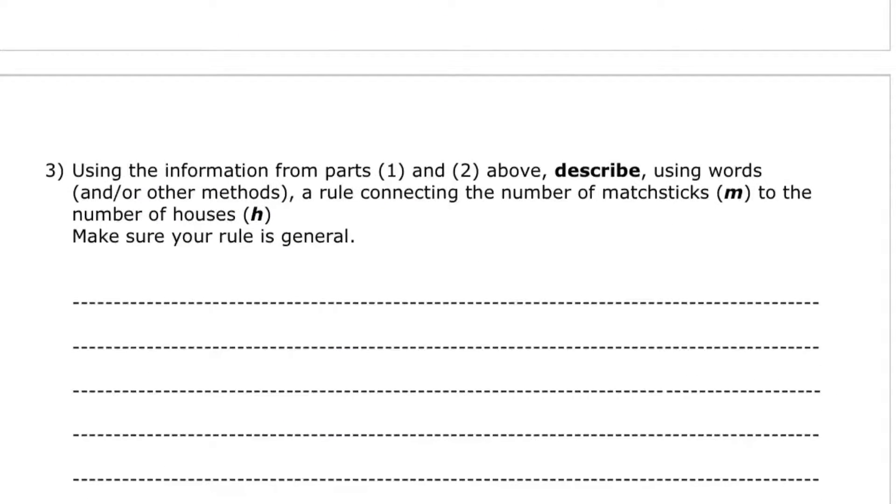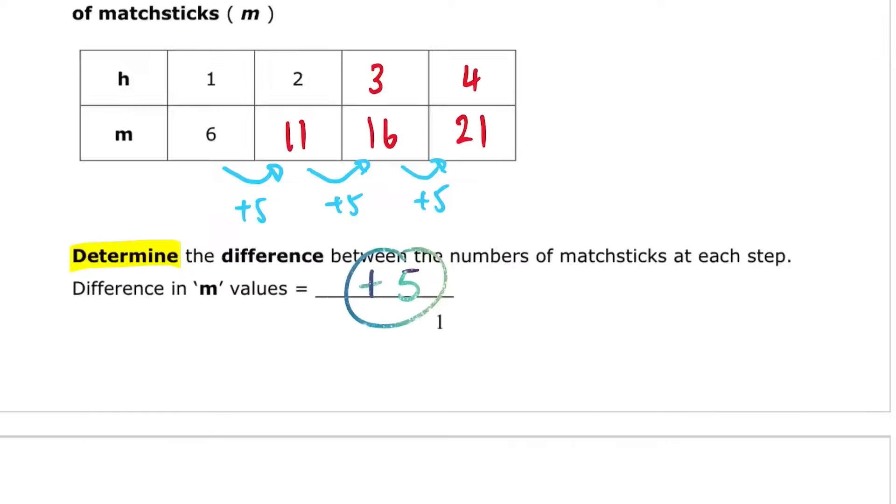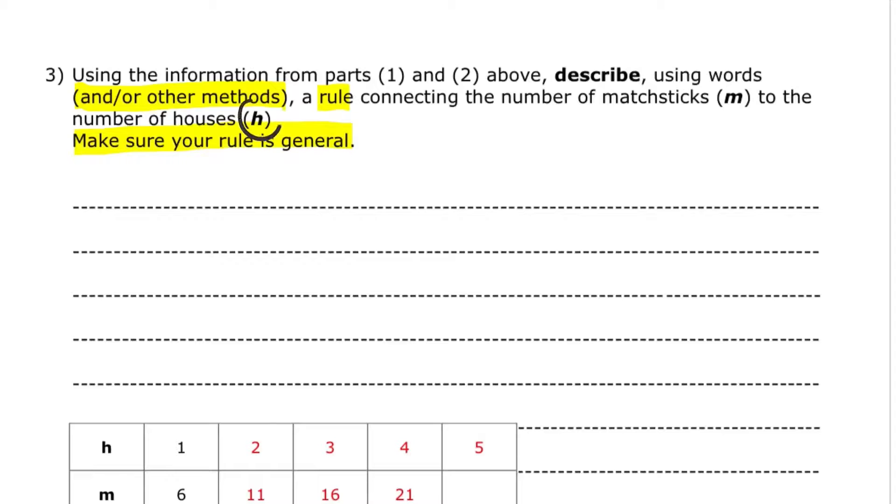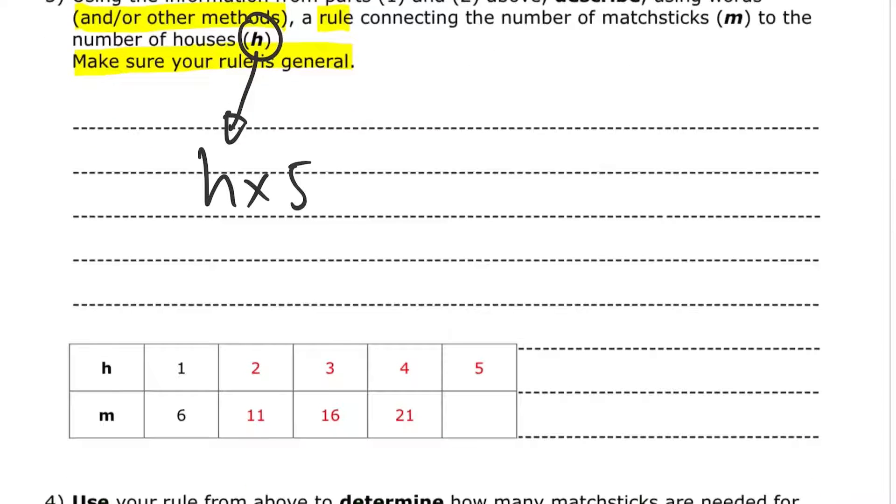Question three. Using the information for parts 1 and 2 above, describe using words and or other methods, a rule connecting the number of matchsticks to the number of houses. Make sure the rule is general. From our table we have a consecutive difference of 5 each time. I'm going to take H and I'm going to times it by 5.